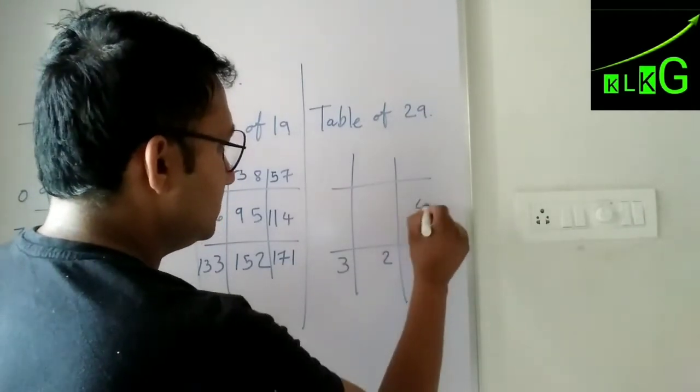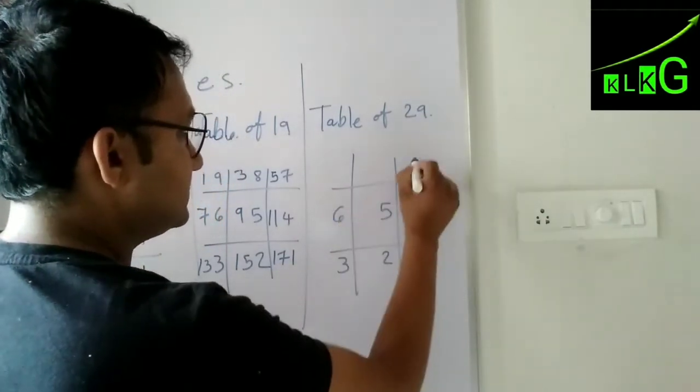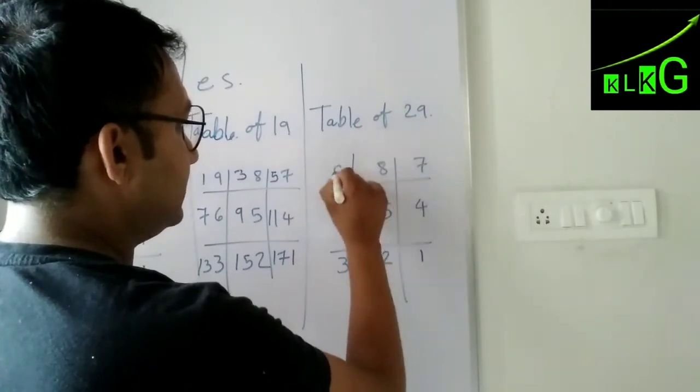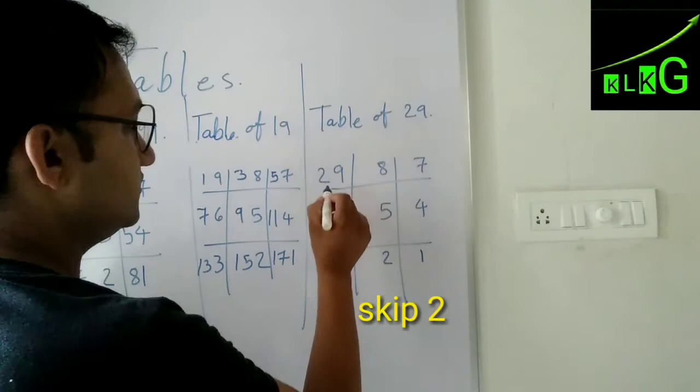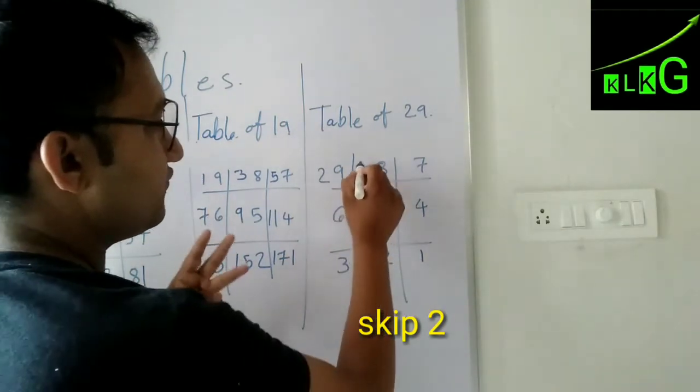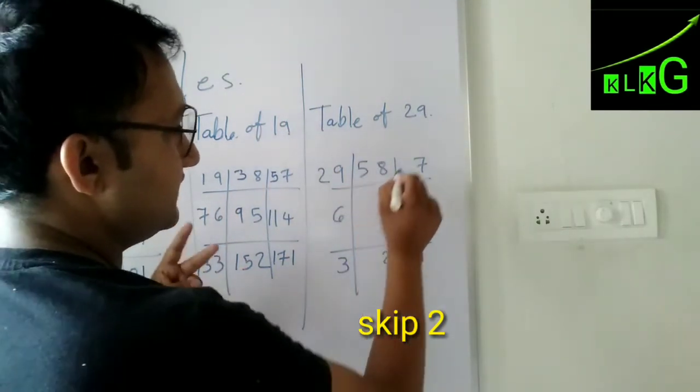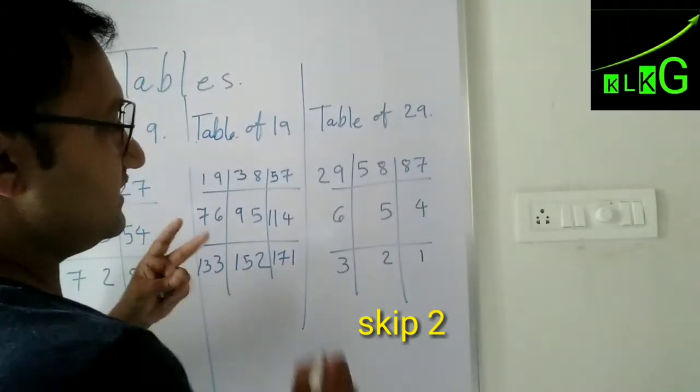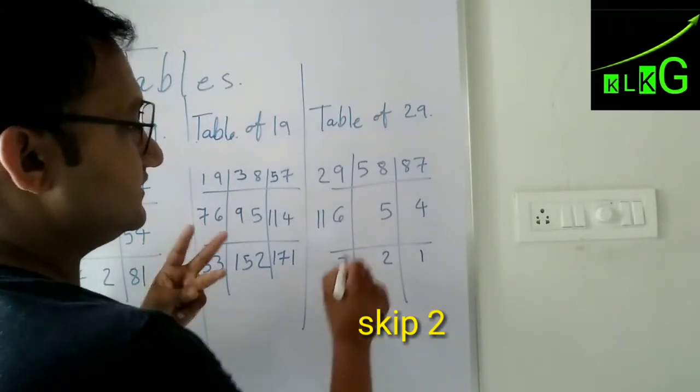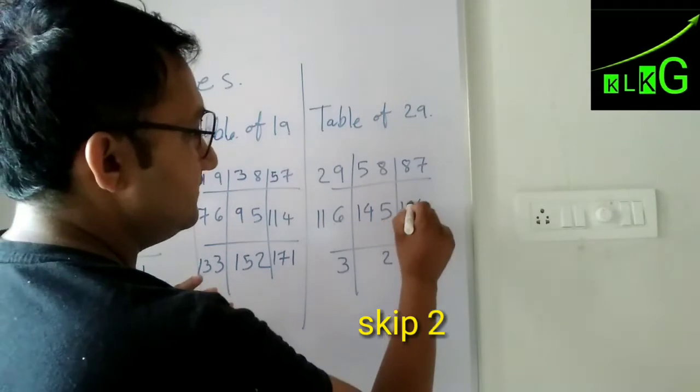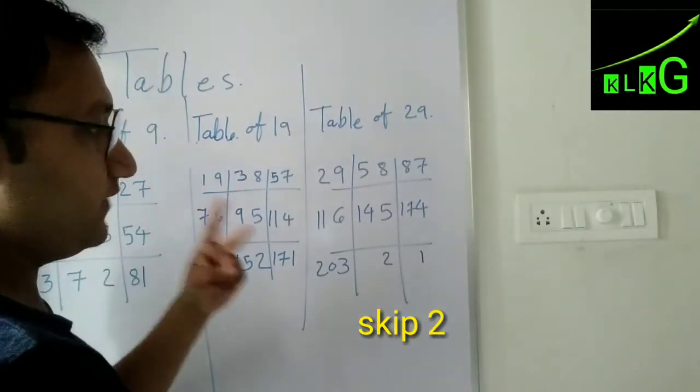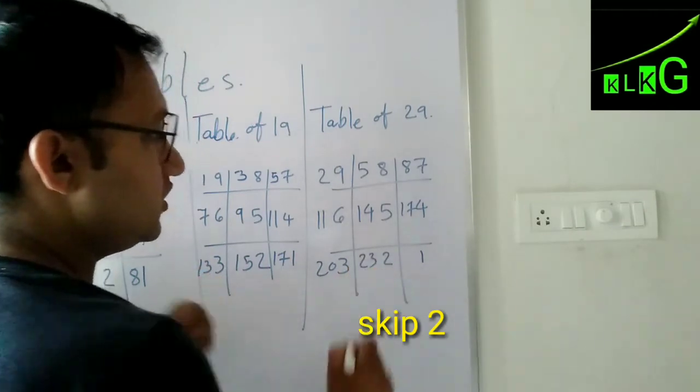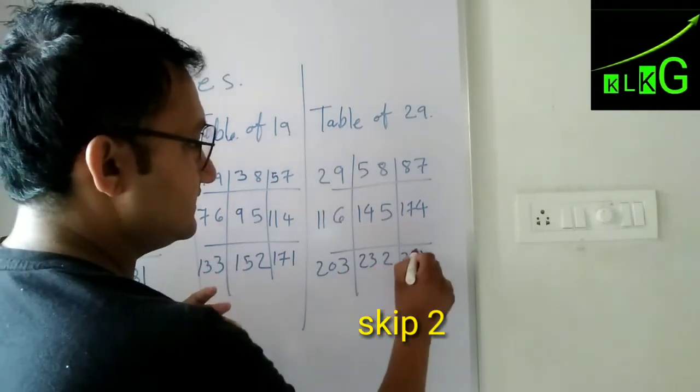Then continuing: 9, 10, 11, 12, 13, 14, 15, 16, 17, 18, 19, 20, 21, 22, 23, 24, 25, 26.